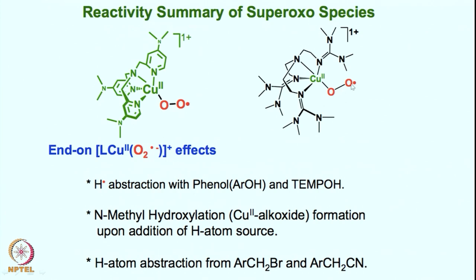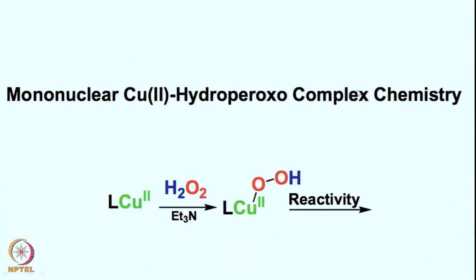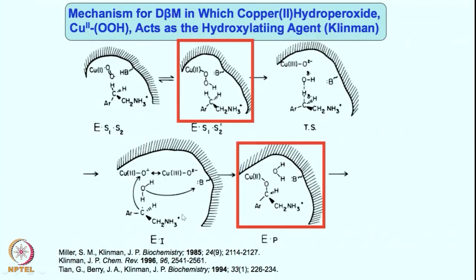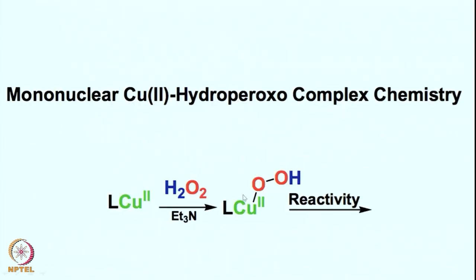Another proton and electron can do the job, but those formations are not that very reliable so far, although some reports are known. But mainly, to form the copper hydroperoxo species, chemists have relied on the reaction of ligand-copper(II) with hydrogen peroxide in the presence of base, which can give the copper(II) hydroperoxo intermediate. So ligand, copper(II), hydrogen peroxide, and base — simple acid-base type chemistry — to give the copper hydroperoxo species.